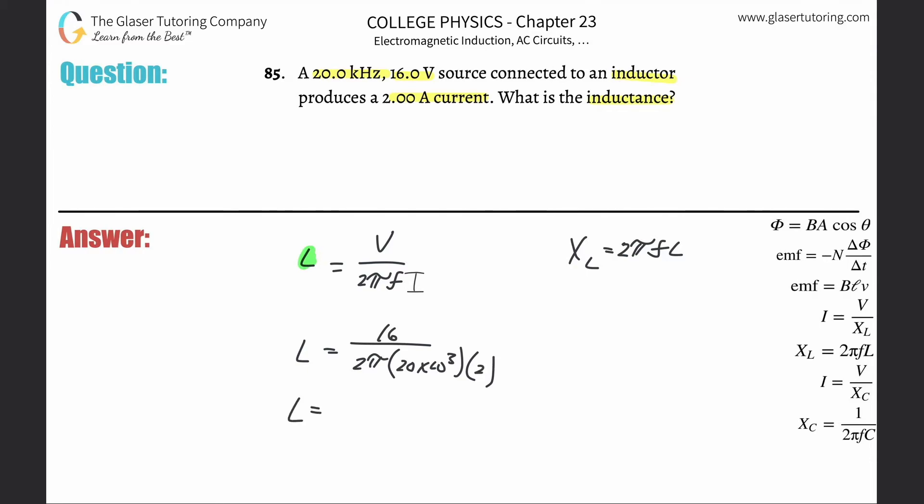We plug it in: 16 divided by parenthesis 2π times 20 times 10 to the third times 2, close parenthesis. This works out to be 6.37 times 10 to the minus fifth henries. You can convert it into micro or milli henries if you want.